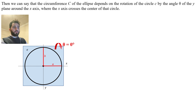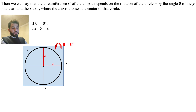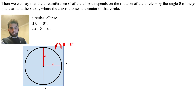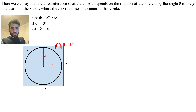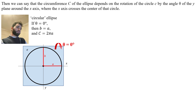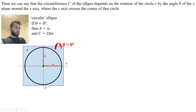It didn't change, so b is equal to a. When theta equals 0, b equals a. We can't really speak of a major and minor axis because they are both the same — this is what we call a circular ellipse. If you ask for the circumference of this circular ellipse, it's simply the circumference of a circle: C equals 2 pi a, where a is the radius.